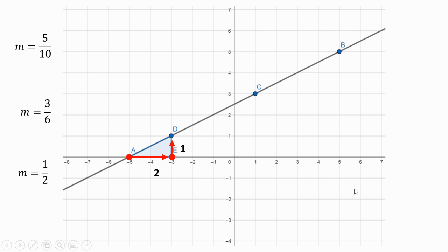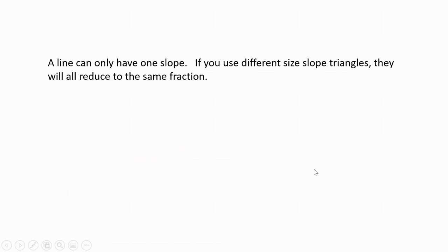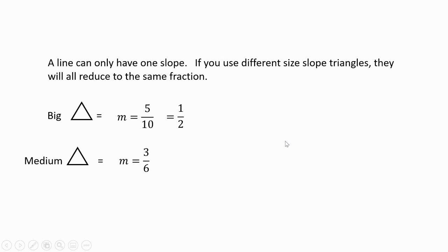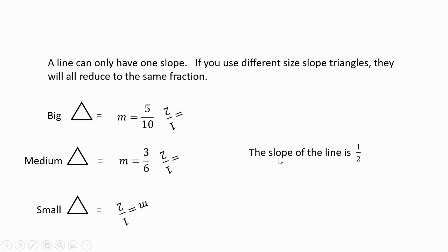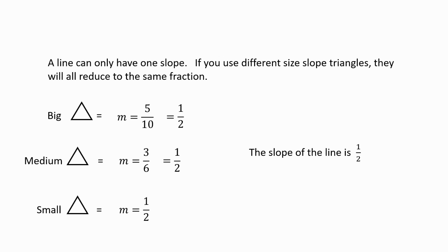So which one is correct? A line can only have one slope. If you use different slope triangles, they will all reduce to the same fraction, as long as they're on the same line. The big triangle gave 5 over 10, which simplifies to 1 over 2. The medium triangle gave 3 over 6, which also reduces to 1 over 2. The smallest triangle was already 1 over 2. The slope of the line is one-half — because every line only has one slope, no matter how you calculate it.